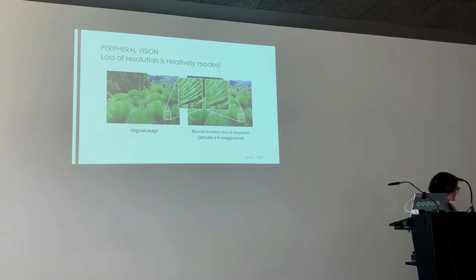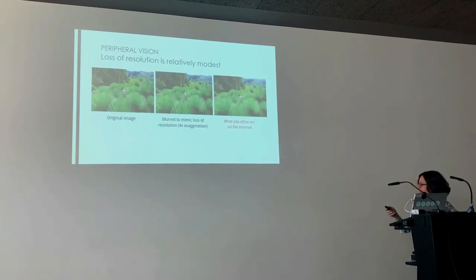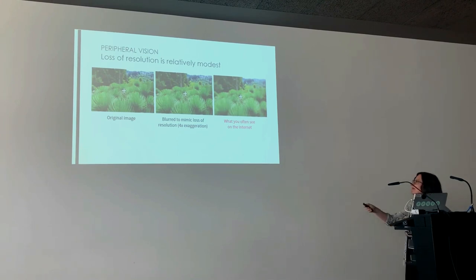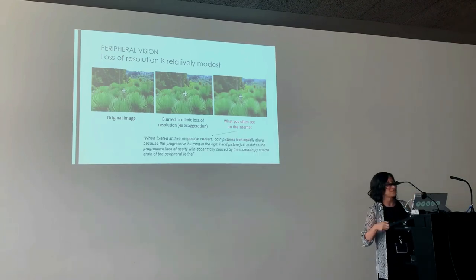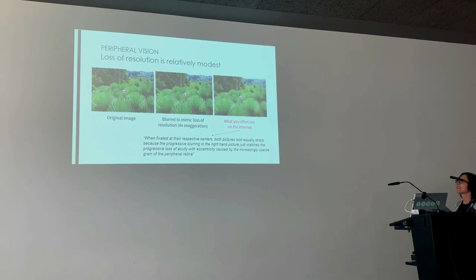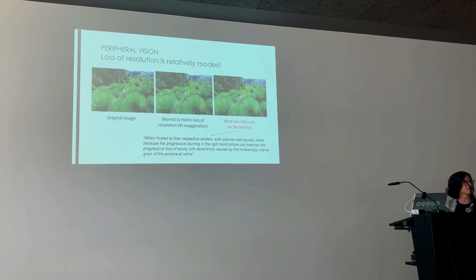There are these charts on the internet showing letter sizes at different eccentricities — but those show threshold size, where you're about 70% correct, so it feels hard. The threshold for letter identification increases only slowly with eccentricity, which seems non-dramatic. People instead tend to show versions where letters have been increased to 10 times threshold size so they all seem equally easy to see — but then people misinterpret this by pointing out how fast letter size has to increase in the periphery, when really they just made the rate of increase 10 times what it actually is.